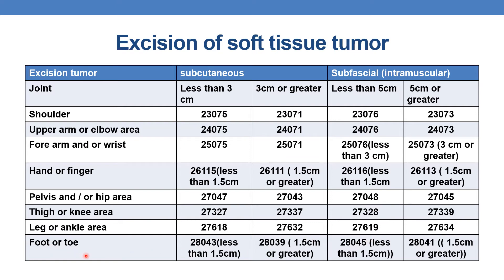Coming to foot or toe — there is a difference in the diameter threshold here as well. For subcutaneous soft tissue tumor: if less than 1.5 centimeters, the CPT is 28043; if 1.5 centimeters or greater, the CPT is 28039. For intramuscular tumors of foot or toe: if less than 1.5 centimeters, CPT is 28045; if 1.5 centimeters or greater, it is 28041. This completes the CPTs for excision of soft tissue tumor.